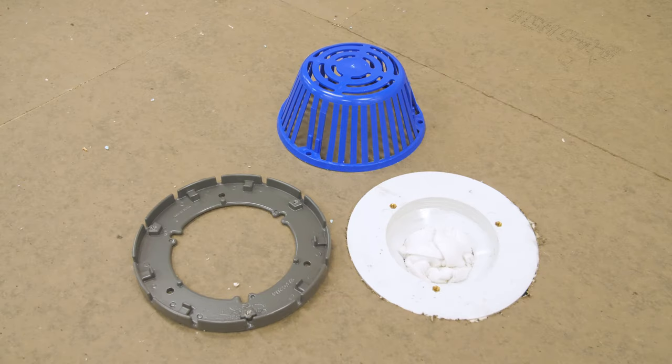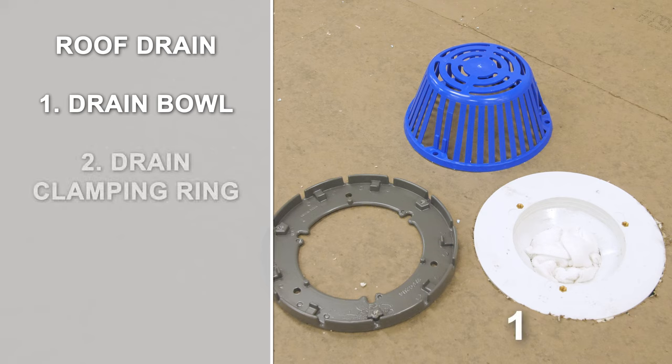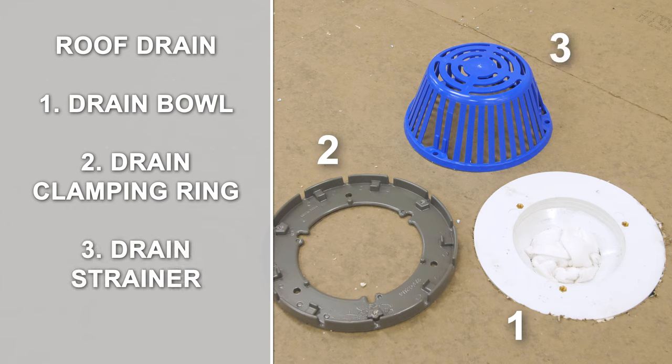A typical roof drain includes three basic parts. The drain bowl, which is mechanically attached or clamped to the roof deck. The drain clamping ring, which provides a compression seal in the membrane. And a drain strainer, which is required to prevent debris from clogging the drain.